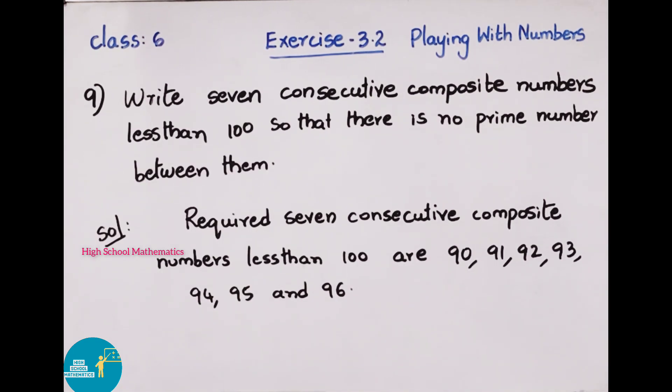Next, 9th question. Write 7 consecutive composite numbers less than 100, so that there is no prime number between them. The question means we need to write 7 composite numbers. They should be less than 100 and continuous. Solution: Required 7 consecutive composite numbers less than 100 are 90, 91, 92, 93, 94, 95 and 96. These 7 numbers are composite numbers, continuous, and also less than 100.